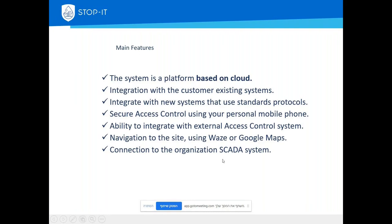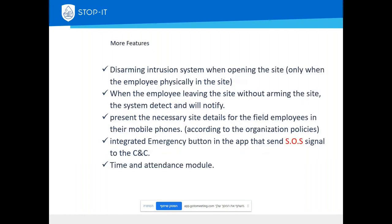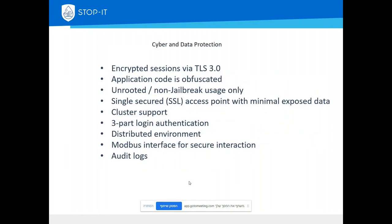We are connected to the SCADA system at Mekorot, sending and receiving a lot of data. We also have an emergency button: if something goes wrong or a user wants to report an alarm or error, with a single press they can send an SOS and the system will alert and show the user's location on the map using GPS coordinates. Additionally, we have a time attendance module — a user can start their work day by pressing start, and manage vacation or end-of-day actions directly in the app.